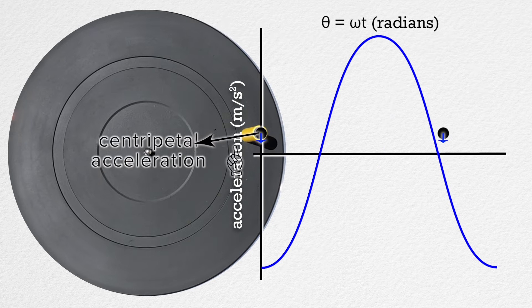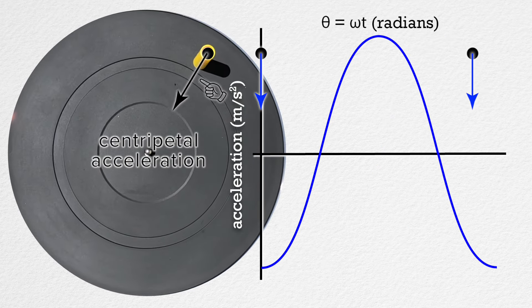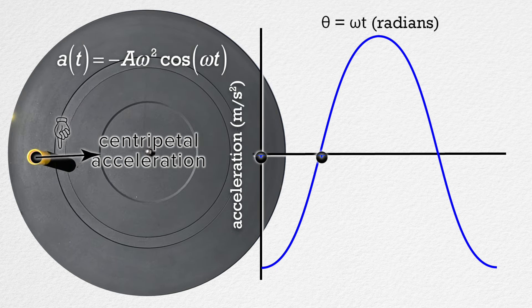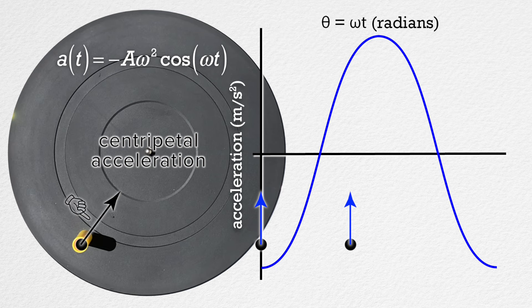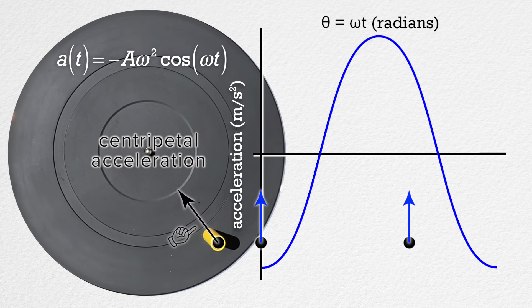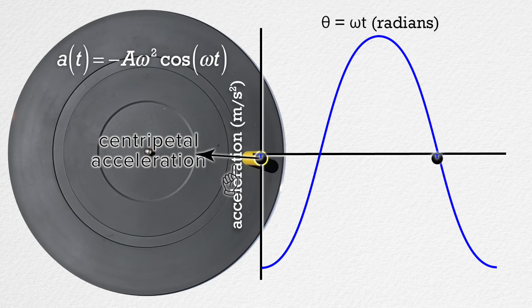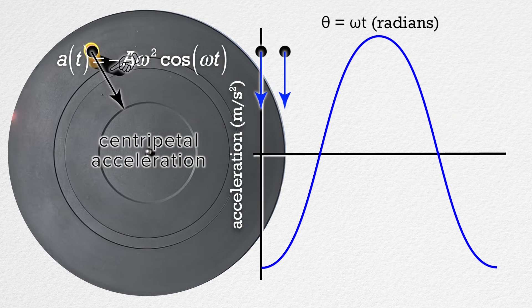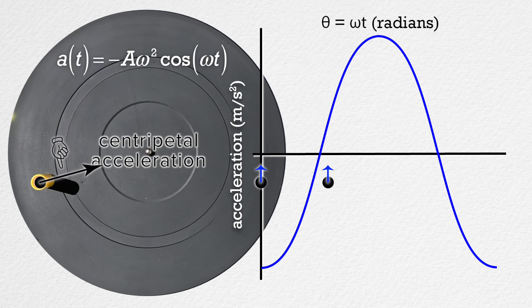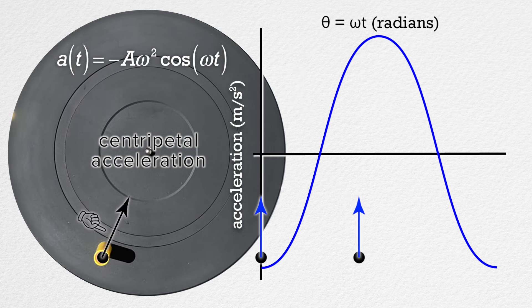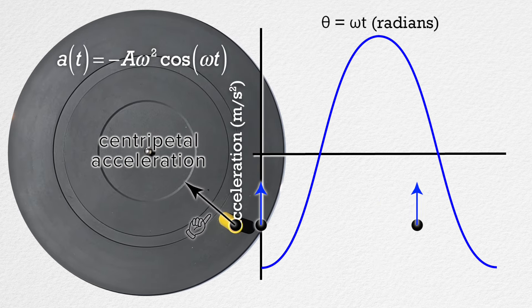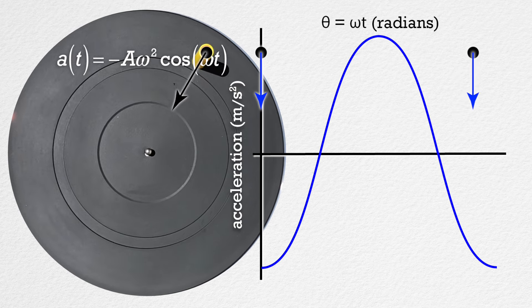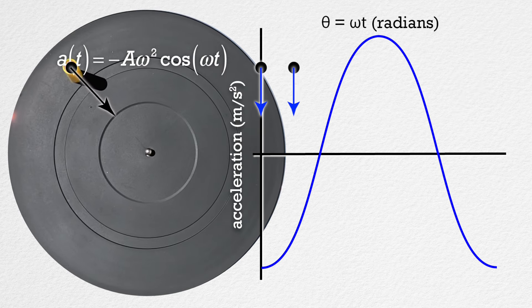Now let's switch to acceleration. In our example, acceleration equals negative amplitude times angular frequency squared times the cosine of angular frequency times time. I have added the centripetal acceleration of the yellow marker cap to the circular motion, and the acceleration of the motion tracked dot moving in simple harmonic motion. Watch how the acceleration of simple harmonic motion is represented by the graph, and how the acceleration of the simple harmonic motion is the vertical component of the centripetal acceleration of the yellow marker cap moving in circular motion.